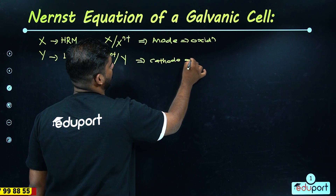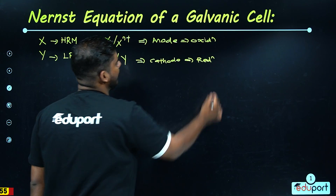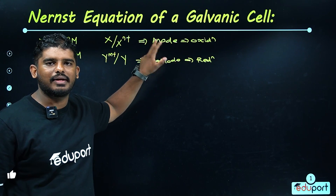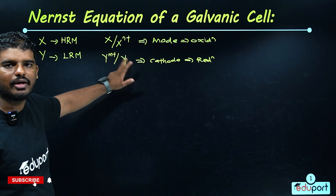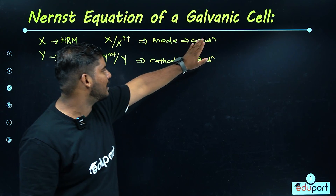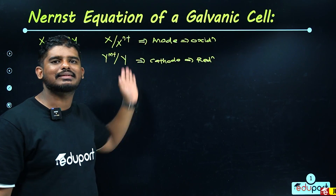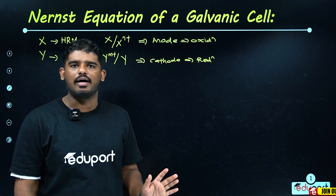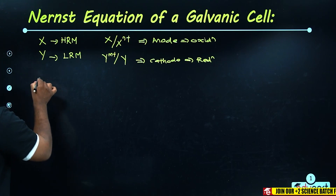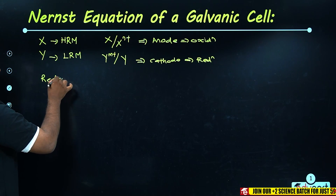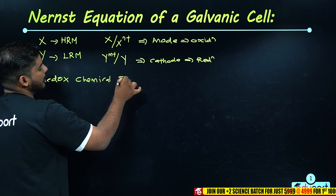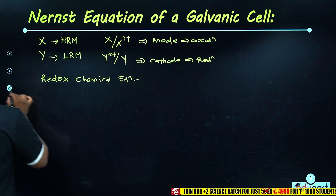The low-reactive metal Y acts as the cathode. Using the redox chemical equation, the anode undergoes oxidation and the cathode undergoes reduction. We use this to write the redox chemical equation.